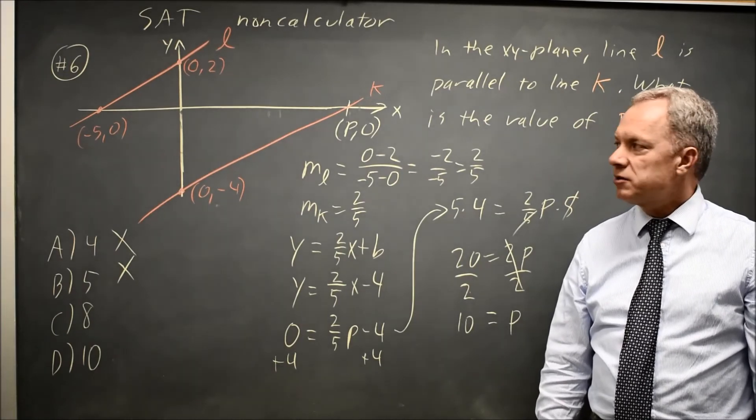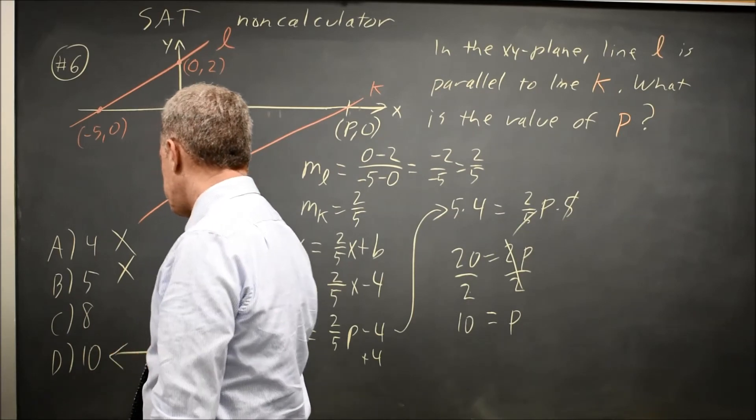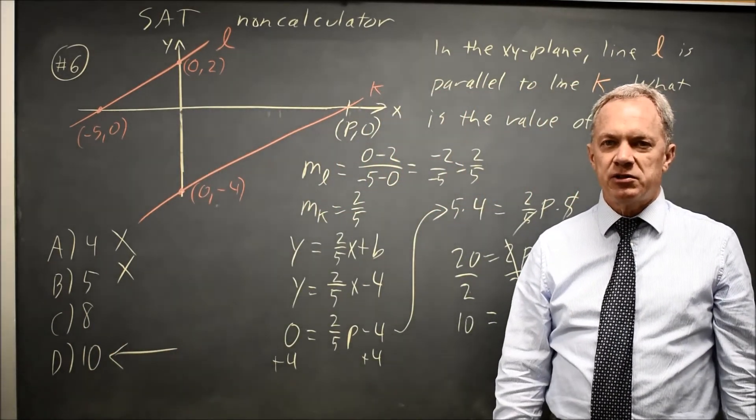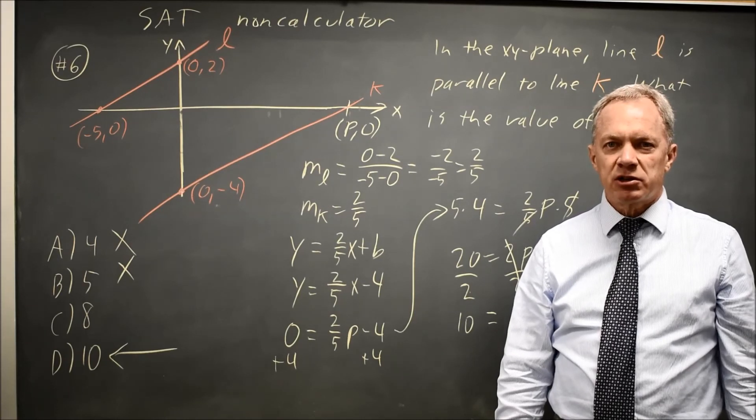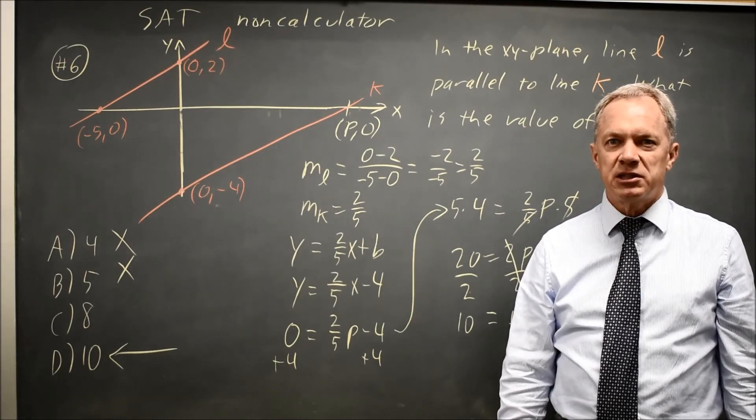So the x-intercept of line K is positive 10, which is choice D. College Board always asks questions involving using the slope, so make sure you're comfortable with slope, and come back soon for my next math video. With math, there's always more.